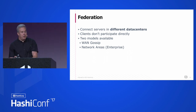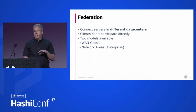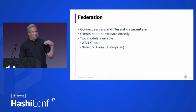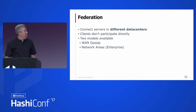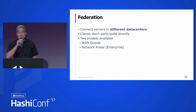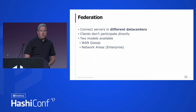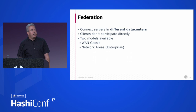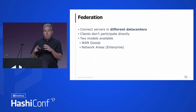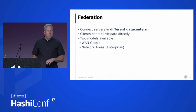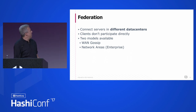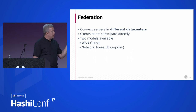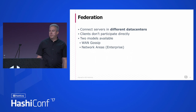The second class of network models supports federation. Once you've created a cluster and want to connect it with another cluster that might be physically located somewhere else or on another continent, you create a relationship between the servers and federate them. The clients don't participate in federation, but by federating data centers together, you give clients access to resources in those remote data centers — for redundancy, or for having a centralized data center managed by a team. There are two federation models: WAN gossip and network areas, which is in the Enterprise version.